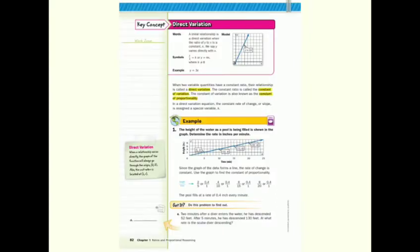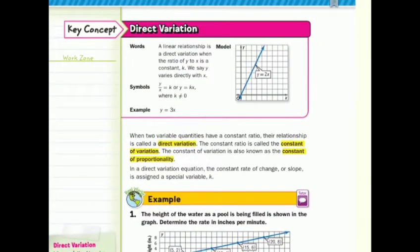Our key concept is that of direct variation. Direct variation is a linear relationship, is a direct variation when the ratio of y to x is a constant k. We say y varies directly with x. An example of this: y equals 3x. When two variable quantities have a constant ratio, their relationship is called a direct variation. The constant ratio is called the constant of variation. The constant of variation is also known as the constant of proportionality. In a direct variation equation, the constant rate of change or slope is assigned a special variable k.